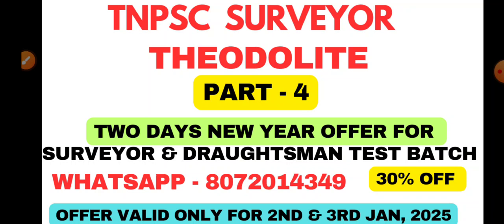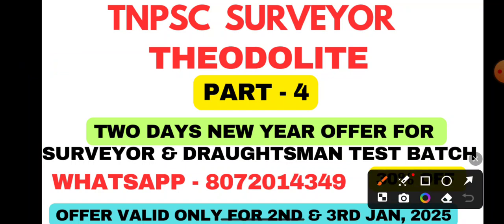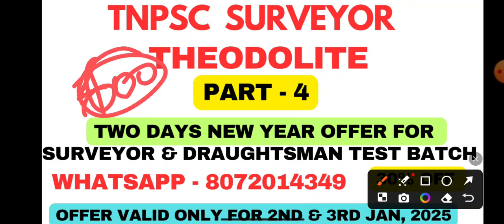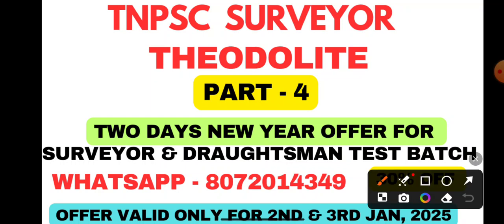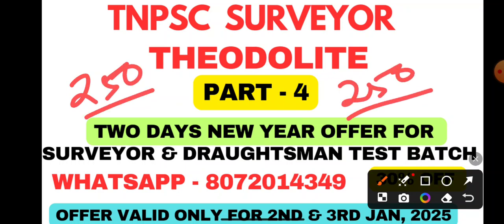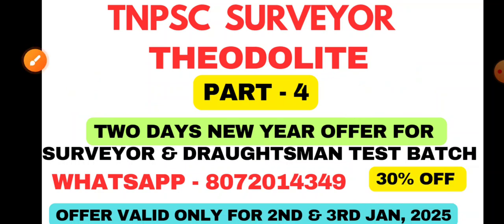Test batch offers. The offer is 30%. Usually Surveyor plus Draftsman test batch is 600 rupees. But in the new year, 2024 offers. If you have two test batches, it is 200 rupees off. If you have Draftsman test batch, Surveyor test batch is 30. If you have Draftsman, it is 300 rupees. Usual rate is 300 rupees. So if you have offer, you can send it. If you have WhatsApp numbers.